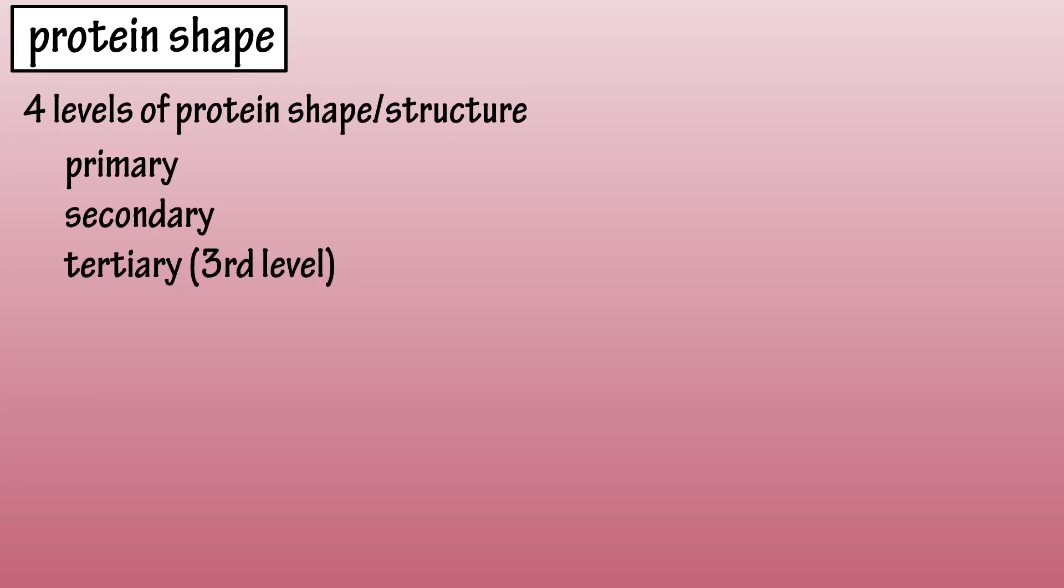The shape of proteins. There are four different levels of protein structure or protein shape: primary, secondary, tertiary or the third level, and quaternary or the fourth level.